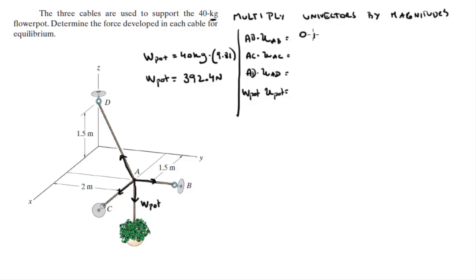For AB times the unit vector AB is 0 on the i plus AB in the j plus 0 on the k. AC is AC in the i plus 0 on the j plus 0 on the k. AD times unit vector AD is minus 0.514 AD in the i minus 0.686 AD in the j plus 0.514 AD in the k.